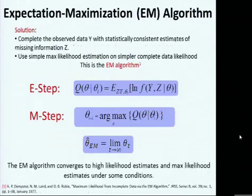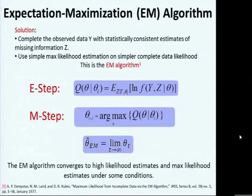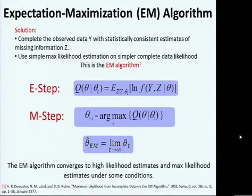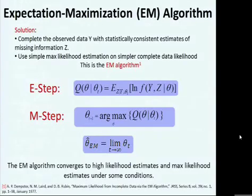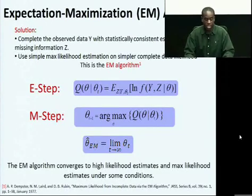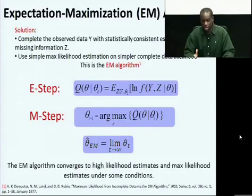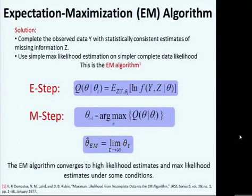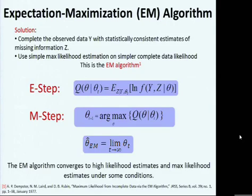Dempster, Laird, and Rubin came up with an algorithm for addressing this problem of missing information. They said we'll take the data and augment it with a consistent estimate for the missing information, which we call z, or the latent variable. We apply regular estimation algorithms to it — in this case maximum likelihood estimation, or in some cases maximum a posteriori estimation. In each case, this algorithm converges to high-likelihood estimates or sometimes maximum likelihood estimates, and it's a workhorse algorithm in modern statistical estimation.